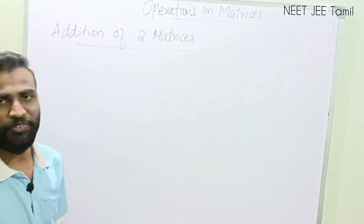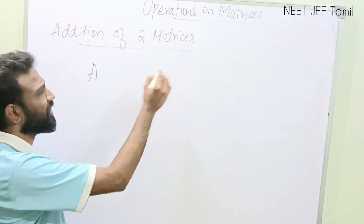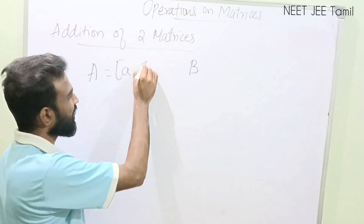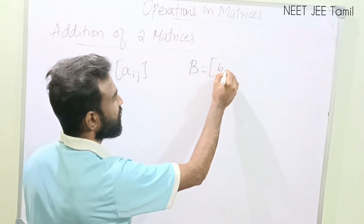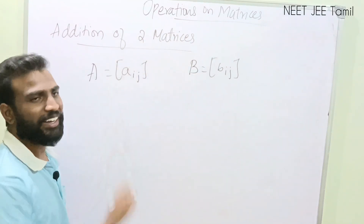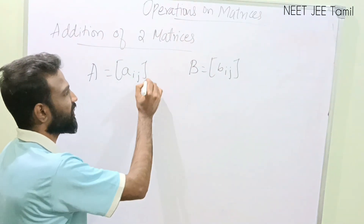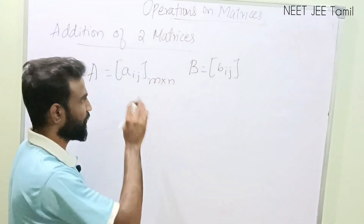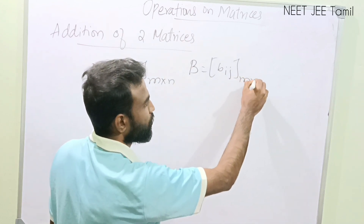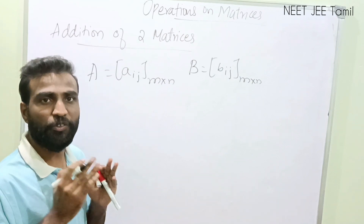Let us discuss the first topic: addition of two matrices. Let us take matrix A and matrix B. Generally matrix A is represented as A of ij and matrix B is represented as B of ij. Whenever we do addition of matrices, the first thing we should keep in mind is that both matrices should be of the same order — let us say M cross N. If matrix A is M cross N, matrix B should also have the order M cross N.